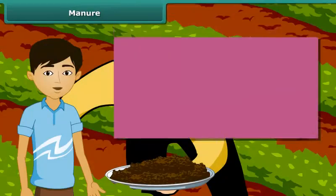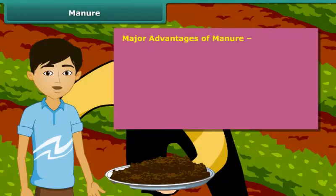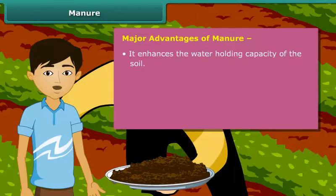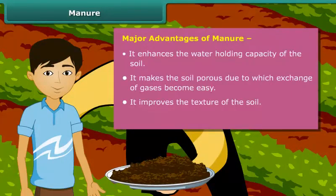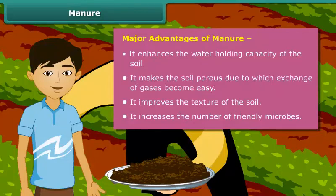Now let us look at some of the major advantages of organic manure. Manure enhances the water holding capacity of the soil. It makes the soil porous due to which exchange of gases becomes easy, and it improves the texture of the soil. It also increases the number of friendly microbes necessary for a healthy crop.